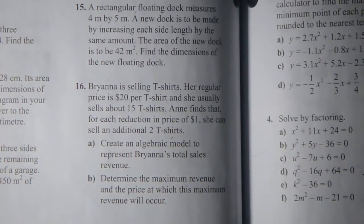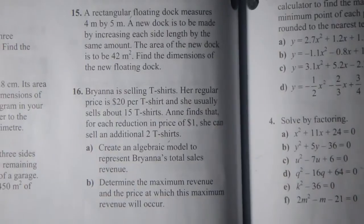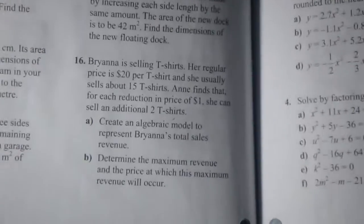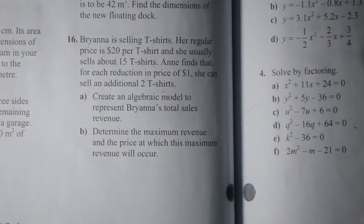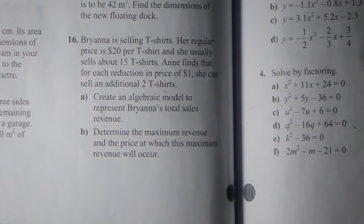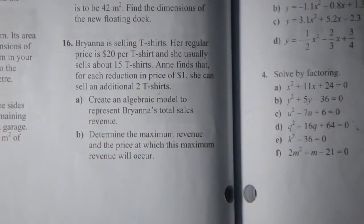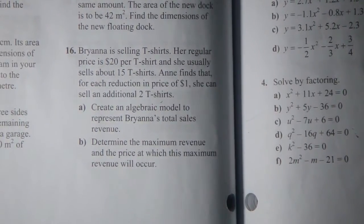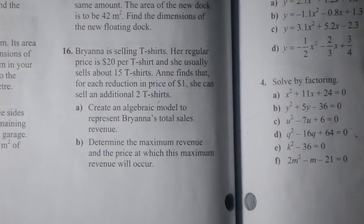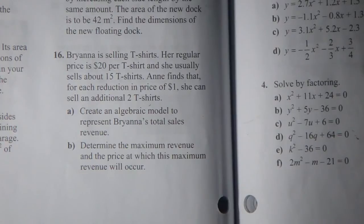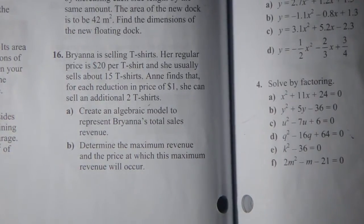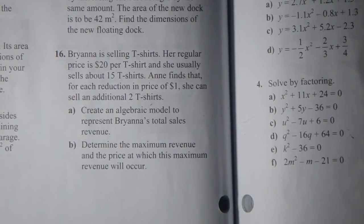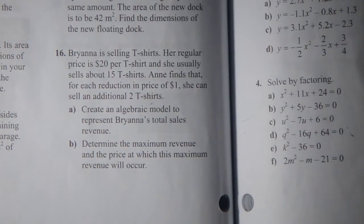Hello everybody, my name is Sifteev and today I'll be talking about quadratic word problems. The word problems I'll be doing in quadratics include revenue word problems, projectile problems, right angle triangle problems, and rectangle problems. The first one we're dealing with is revenue problems. The question reads: Brianna is selling t-shirts, her regular price is $20 per t-shirt, she usually sells about 15 t-shirts, and for each reduction in price of $1 she can sell an additional two t-shirts.